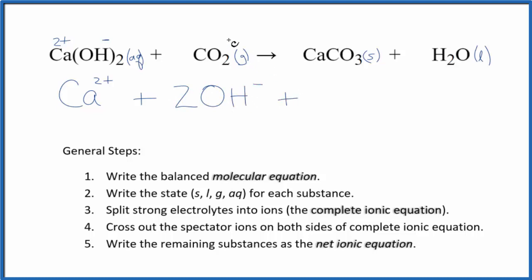In net ionic equations, we don't split solids, gases, or liquids apart. We have CO2, our gas, as a reactant. For products, we have CaCO3, a solid that we don't split apart, and H2O, a liquid.